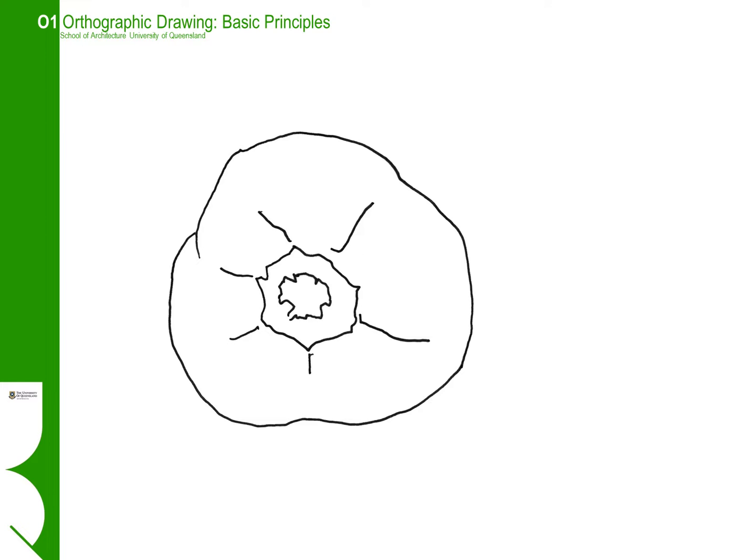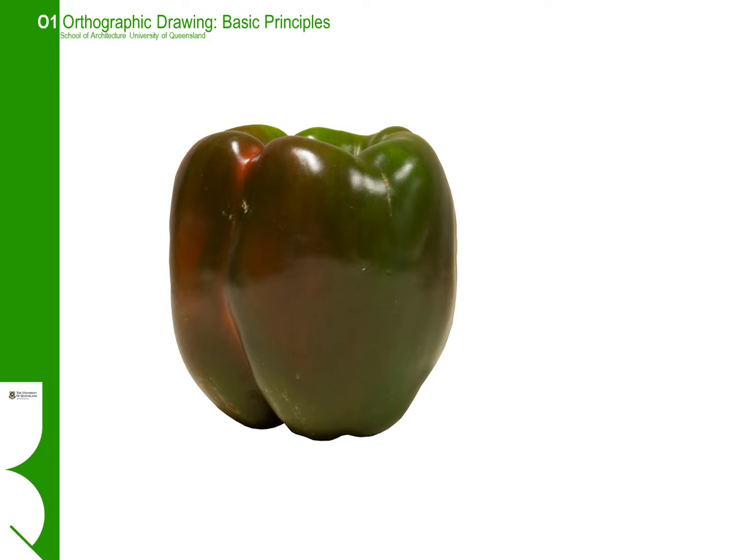Here's a very simple top-viewed drawing. It could be the equivalent of a roof plan of a building, but it just sort of shows the general outline and geometry of that capsicum when viewed from the top. The same applies from the side.